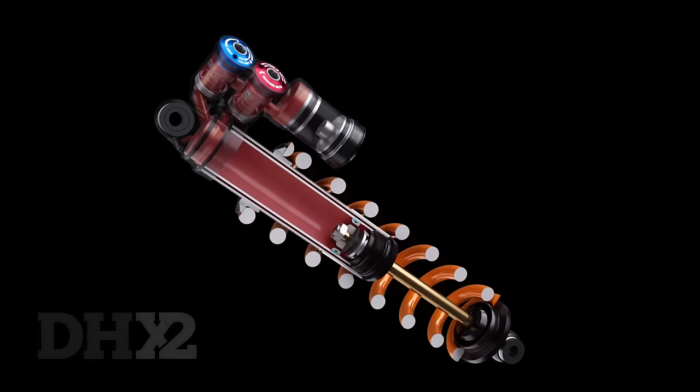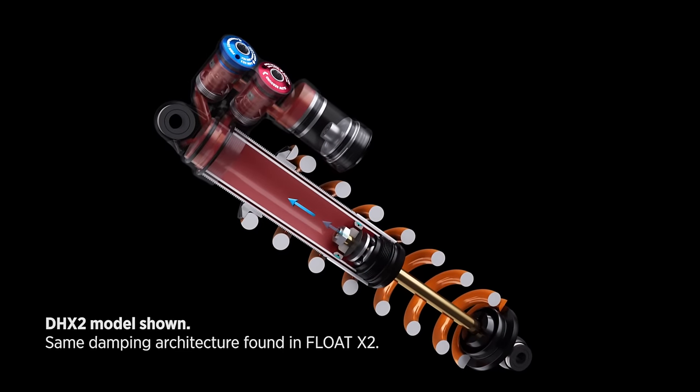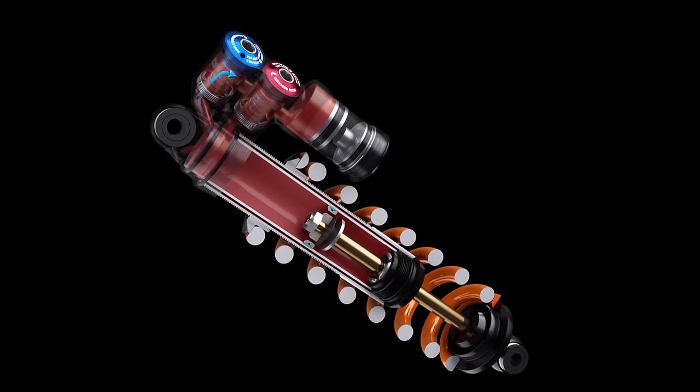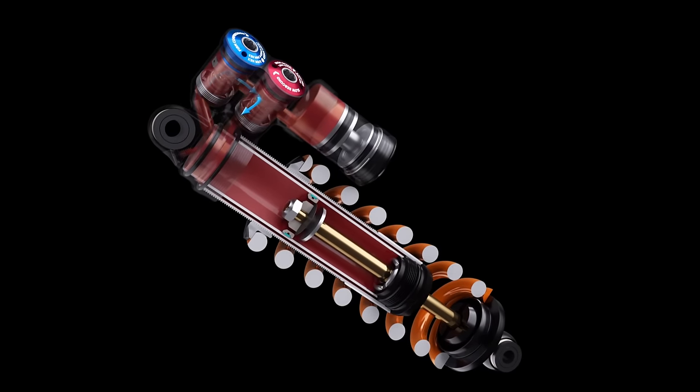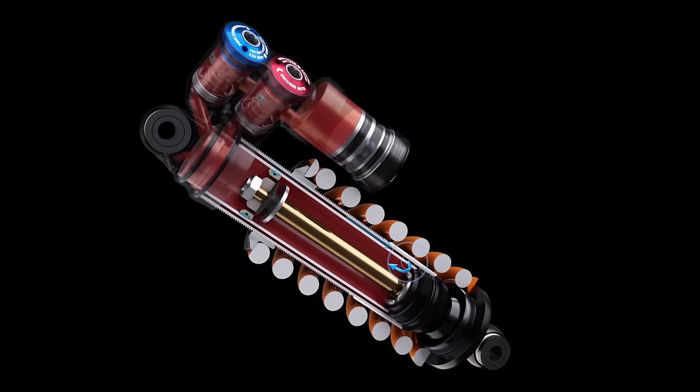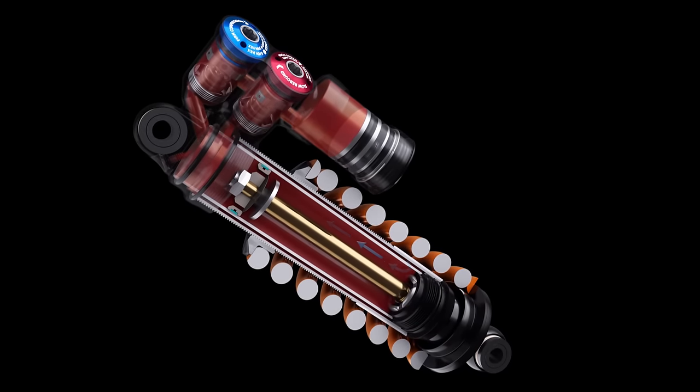When the X2 shock is compressed, the main piston moves the full column of oil through the inner body and into the compression rod valve. The oil then moves through the compression rod valve and recirculates between the two body tubes, through the bleed holes, and back into the inner body behind the main piston.